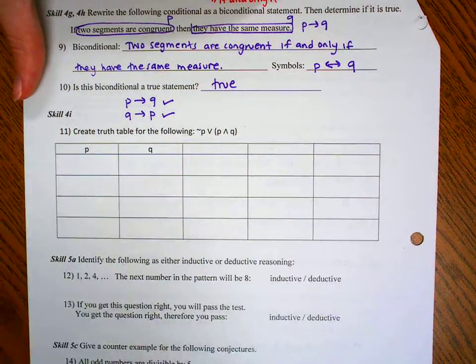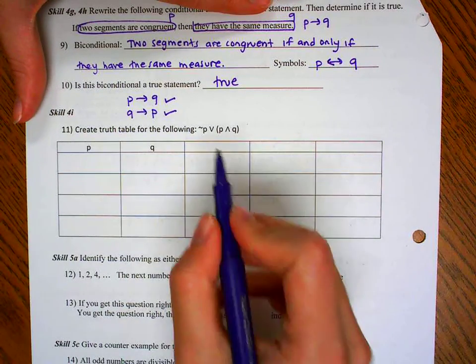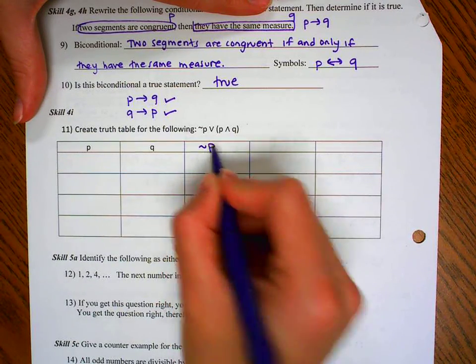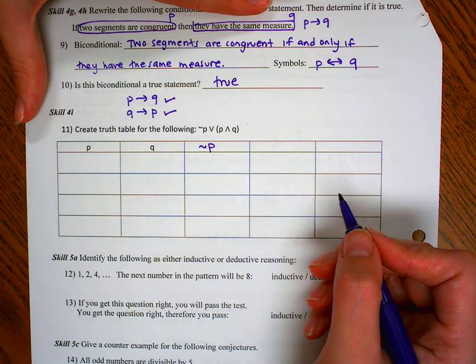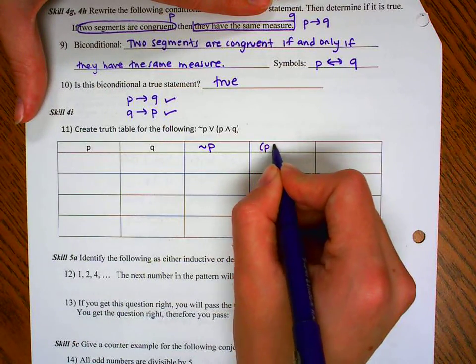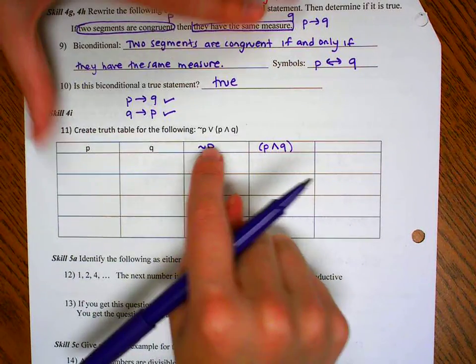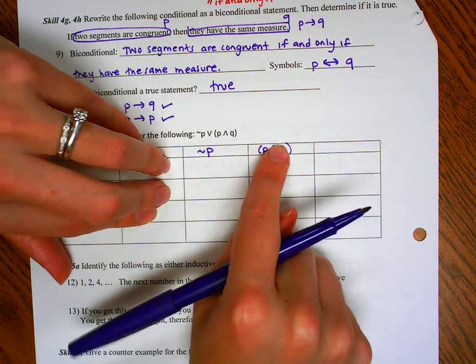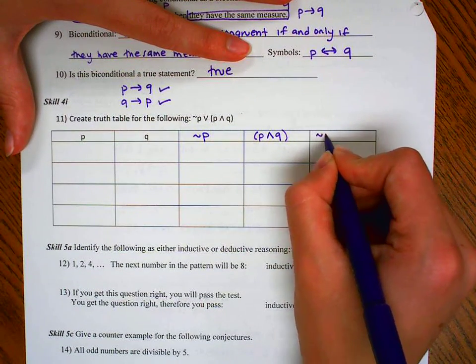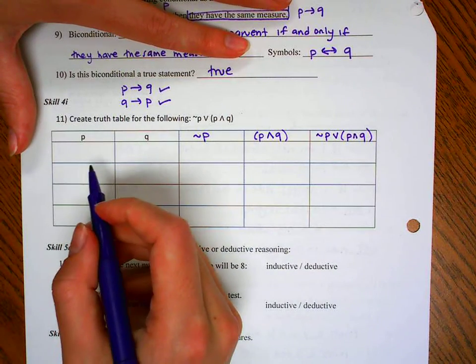4i, for those of you in my class, you know that truth tables are my favorite. So let's do that really fast. The first column I put in whatever has a negation. So P has a negation, we'll put that here. There's no more negations, but they do have parentheses. So the next thing is going to be my parentheses. And then since I have everything I need, I can now do this thing or this thing. I have those pieces ready to go. So now I can do my final step of negation of P or P and Q.